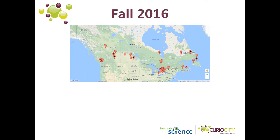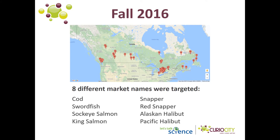In the fall of 2016, students across Canada were asked to collect samples of fish from grocery stores and fish markets. Eight different types of fish were chosen, including cod, swordfish, sockeye and king salmon, snapper and red snapper, as well as Alaskan and Pacific halibut. We were excited to see that students from many different regions of Canada were able to collect and submit samples.